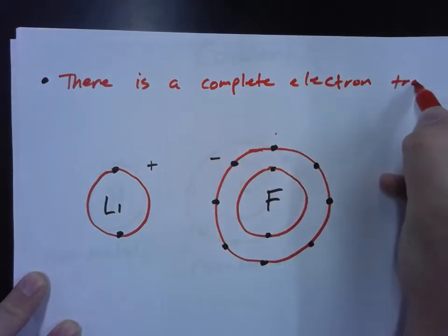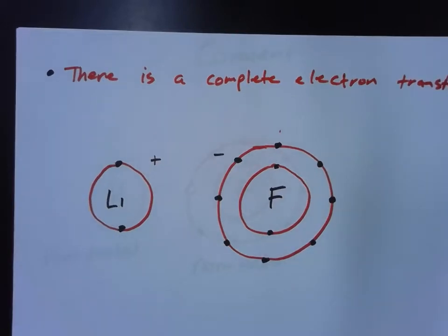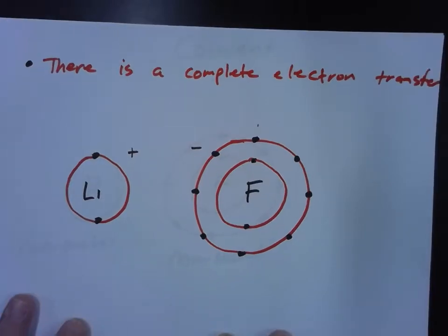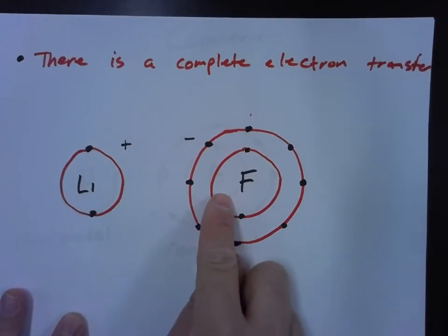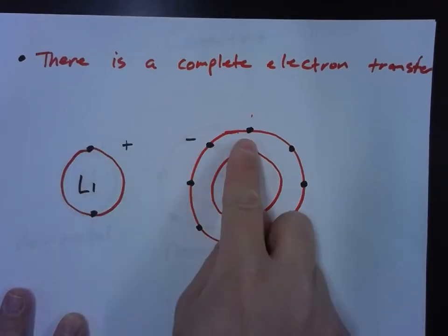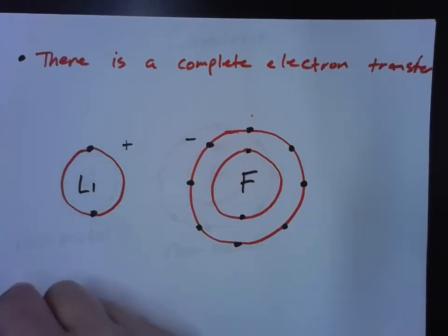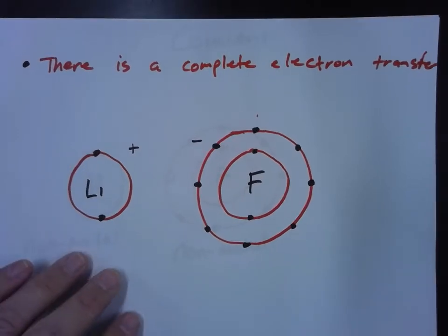So the other characteristic of an ionic bond is electron transfer. There's an electron transfer. And where does it go? The electron is transferred from the metal to the non-metal. The electron is completely transferred over there. So that's an ionic bond.